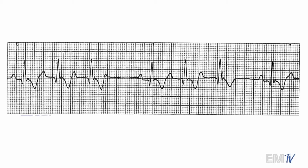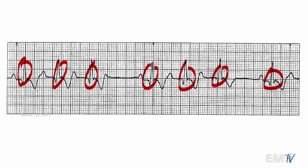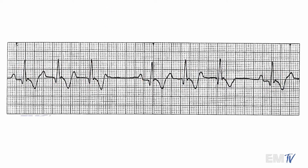Let's go ahead and count out our QRS complexes here first: one, two, three, four, five, six, seven. So it's not bradycardic — it's a heart rate of 70. But let's go ahead and examine a couple of things here. There are some areas where there are P waves and no QRS complexes. Well, specifically there's one area. That's what makes this card a little bit more challenging.